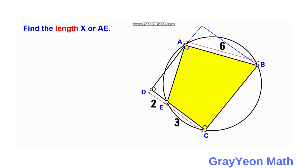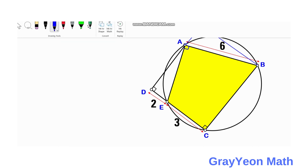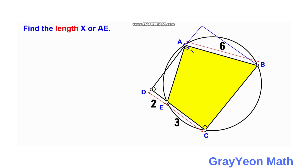Next, we draw a line from this point A perpendicular to segment BC. So this is perpendicular, and this will form a right triangle. So we find this length. This length is actually 5, because this is below 2 plus 3. So 6 squared minus 5 squared.